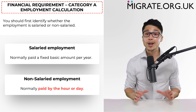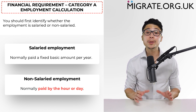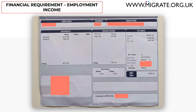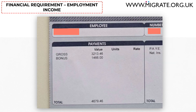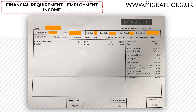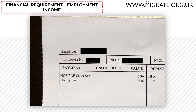Pay slips are often very helpful when determining whether the Home Office caseworker is likely to determine the employment to be salaried or non-salaried. This is an image of a salaried monthly pay slip. Here we can see the basic monthly pay of £3,213.46 and a bonus of £1,466. The basic pay for salaried employees tends to stay the same month after month — this figure only changes when the employer gives a pay rise or cut. The bonus figure, just like overtime, tends to vary month after month. Here is an example of a monthly non-salaried pay slip, which clearly states hourly pay, with the monthly amount received varying considerably.